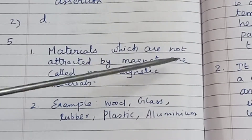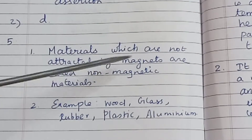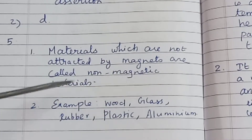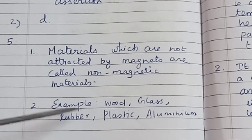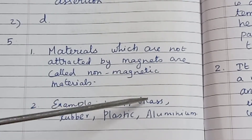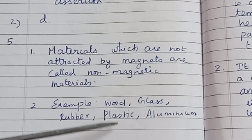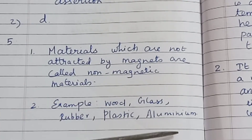Answer to Question 5: Materials which are not attracted by magnets are called non-magnetic materials. Examples include wood, glass, rubber, plastic, and aluminium.